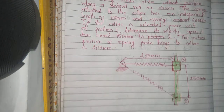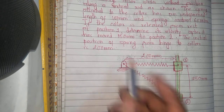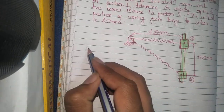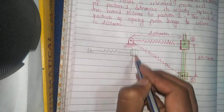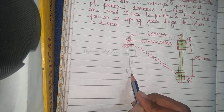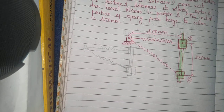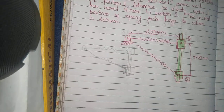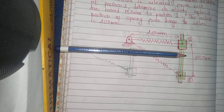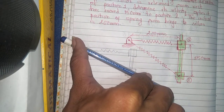Before solving the problem we should understand the motion of the collar and the position of the spring. At the beginning, the hinge is fixed and the spring is attached to the collar on the vertical rod. After the collar moves downward and reaches position two, the spring gets elongated and its representation changes — it extends from the hinge to the new collar position.